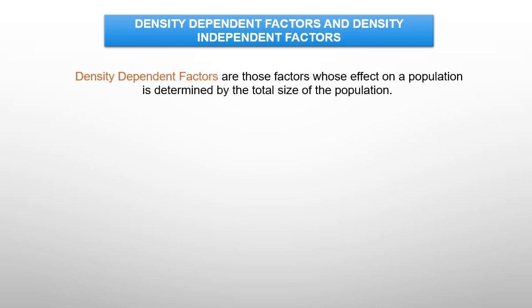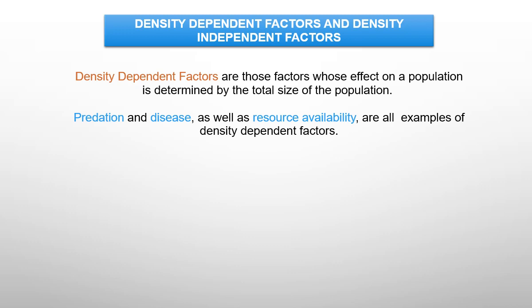Density dependent factors are those whose effect on the population is determined by the total size of the population. Predation, disease, and resource availability are all examples of density dependent factors. They have their greatest effect when the population is large and dense. Examples include competition, predation, and disease — meaning density dependent factors always act most strongly on large populations.